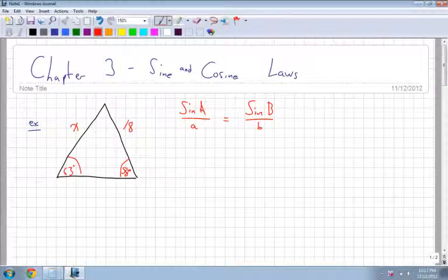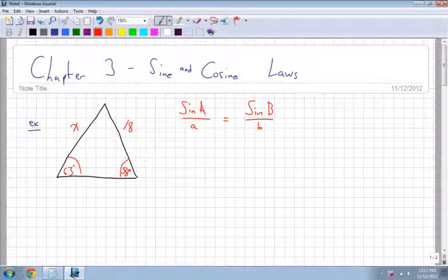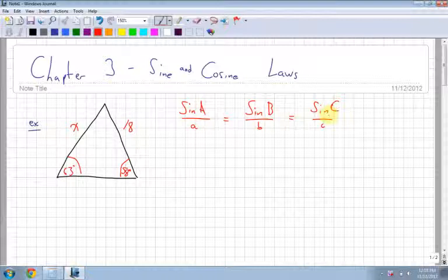Chapter 3 is the sine and cosine laws. The first thing I'm going to go over is the sine law, and then I'll go over the cosine law. So I'll just run through some examples. The formula that you might know is sine A over A equals sine B over B, and it actually continues on to say sine C over C, and these are all equivalent.